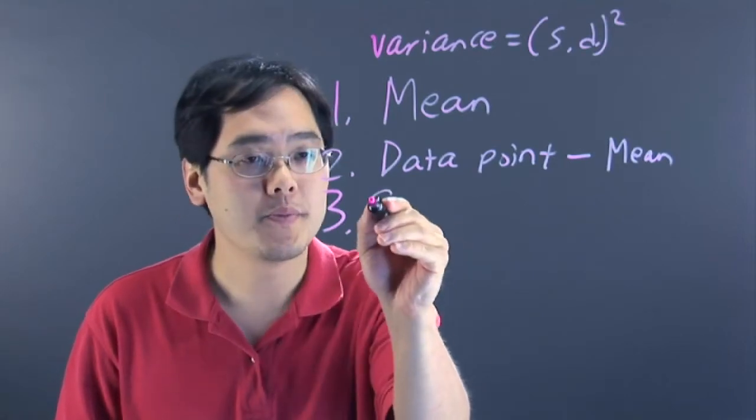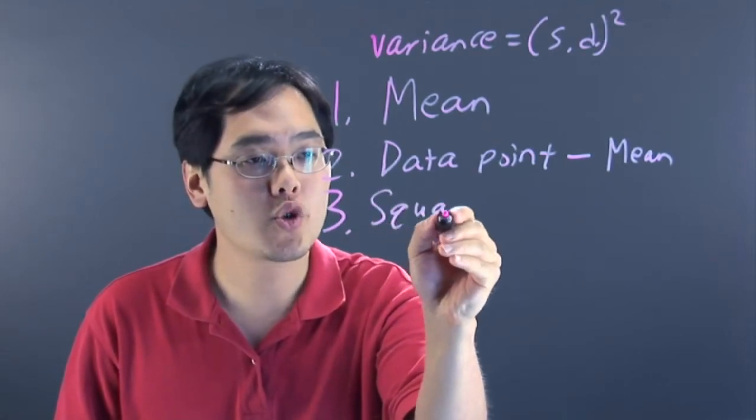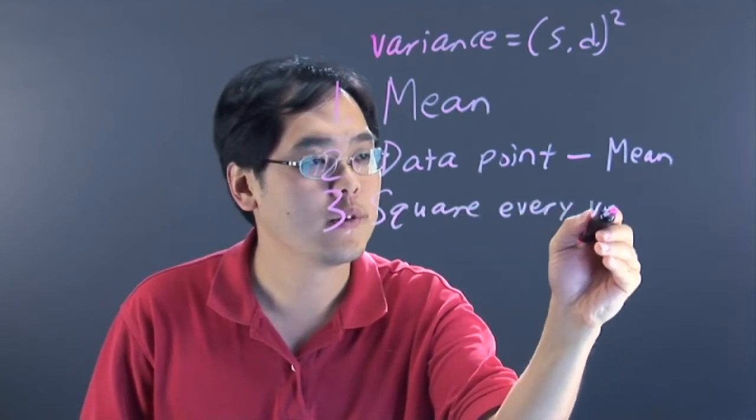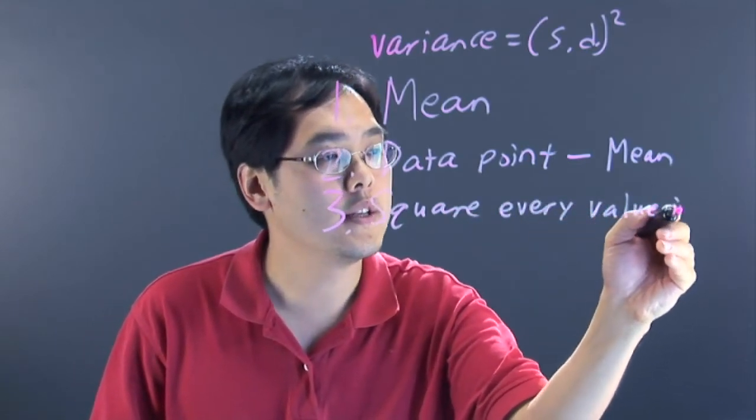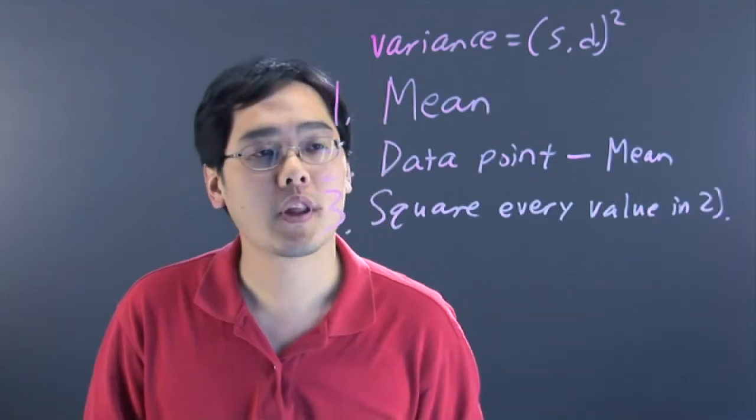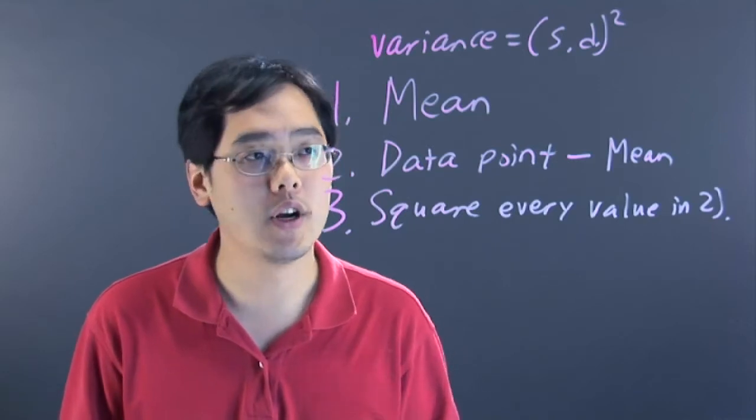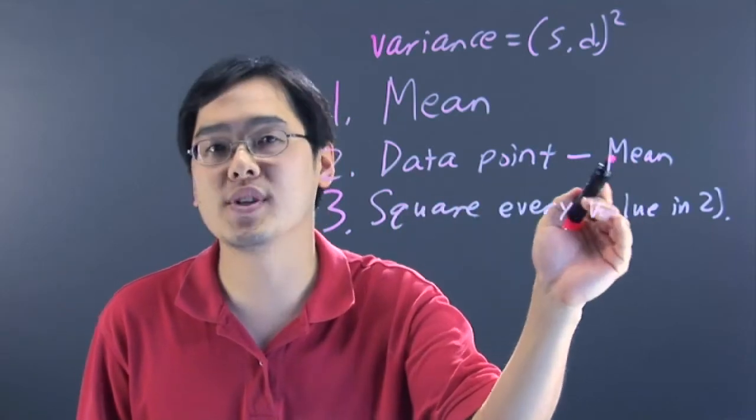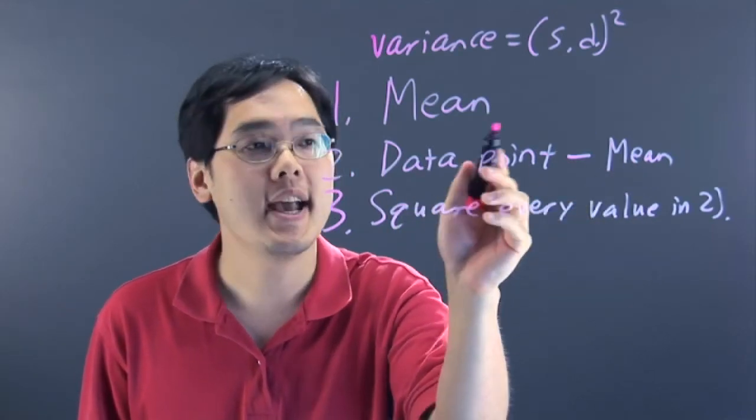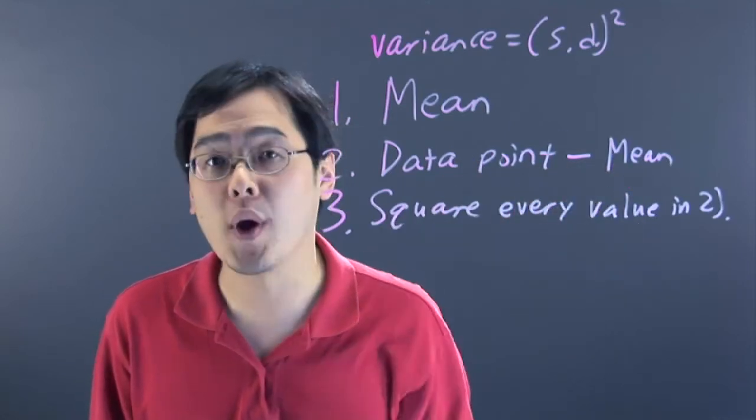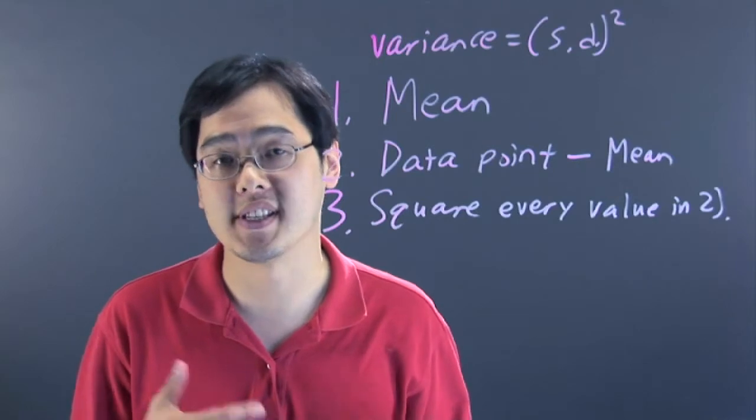The third step is you square every value in the previous step. Remember, squaring means you have to raise every number to the second power. So if your mean was 6 and your data point was 9, 9 minus 6 is 3. You have to take that 3 and square that number. So 3 squared is 9.